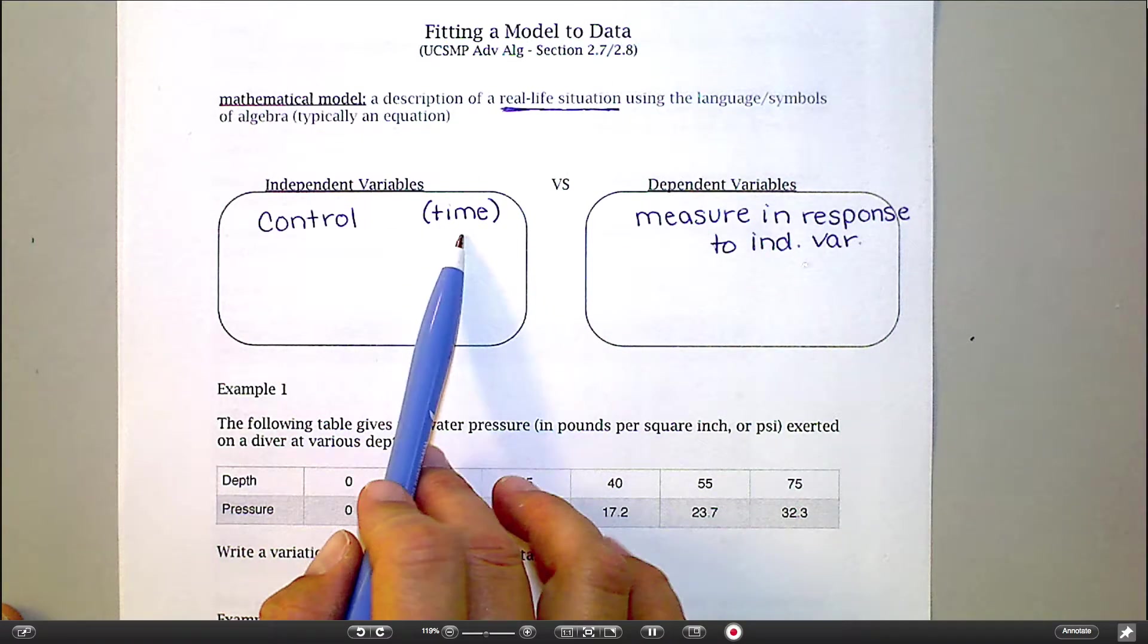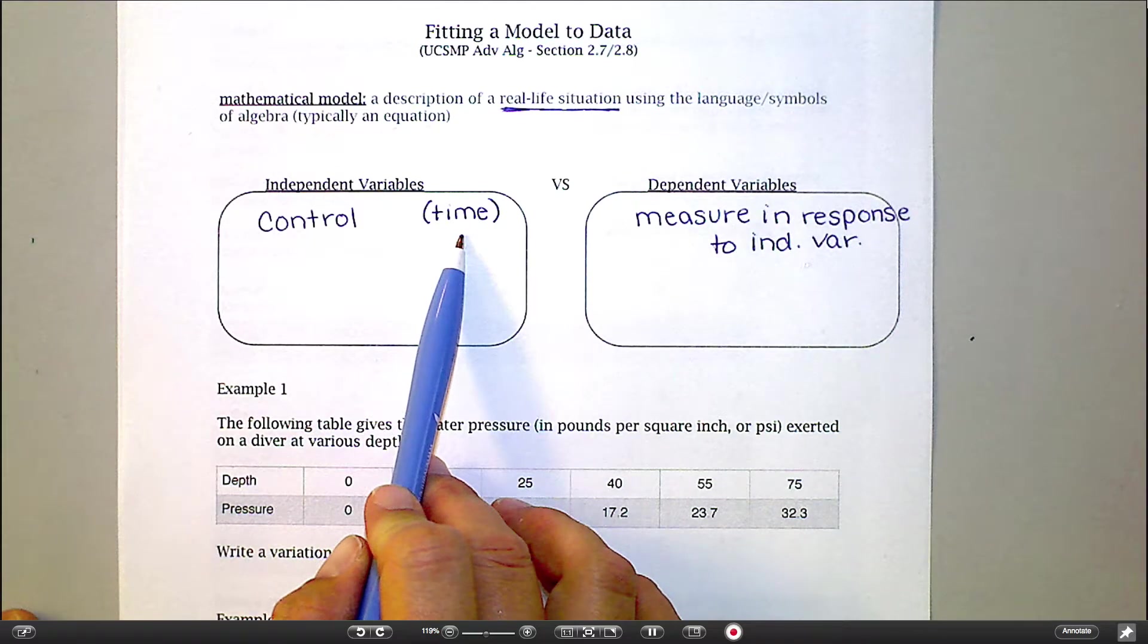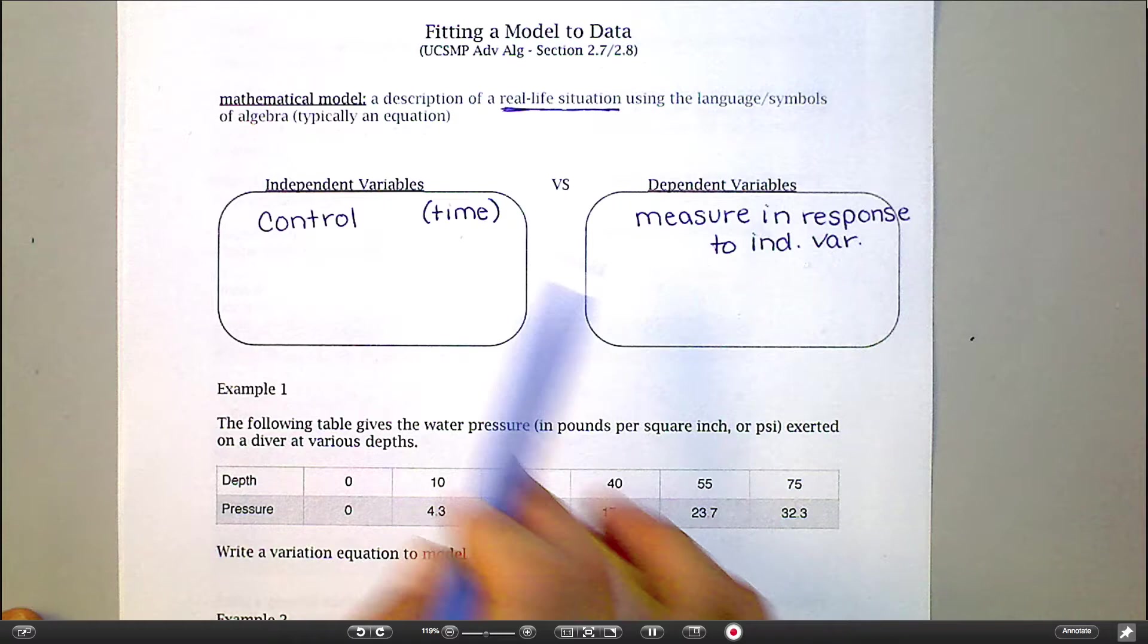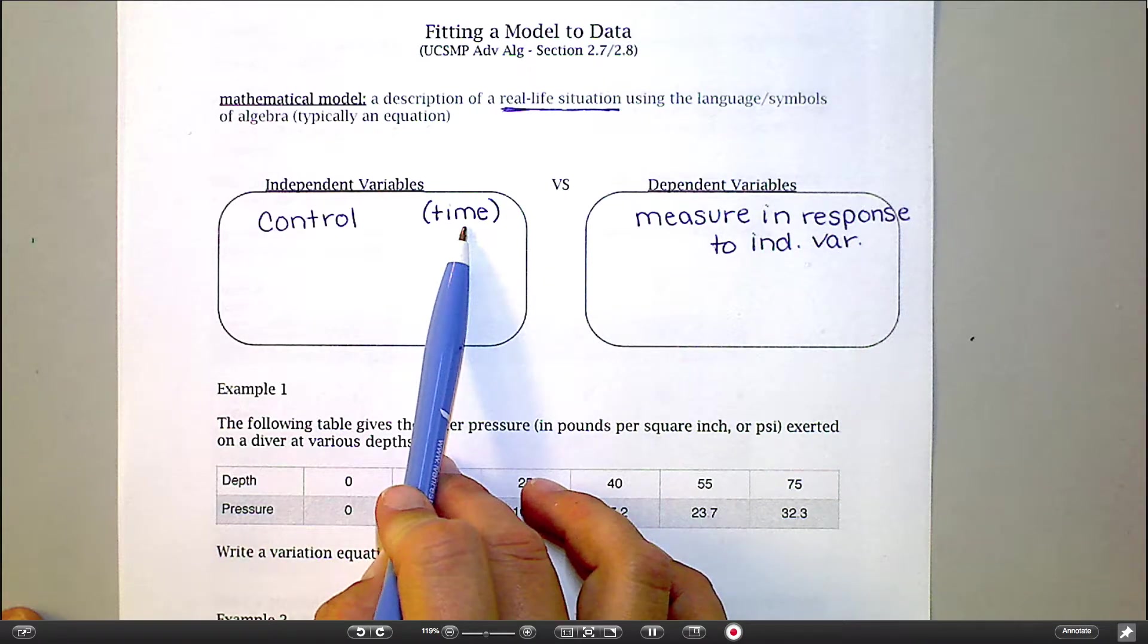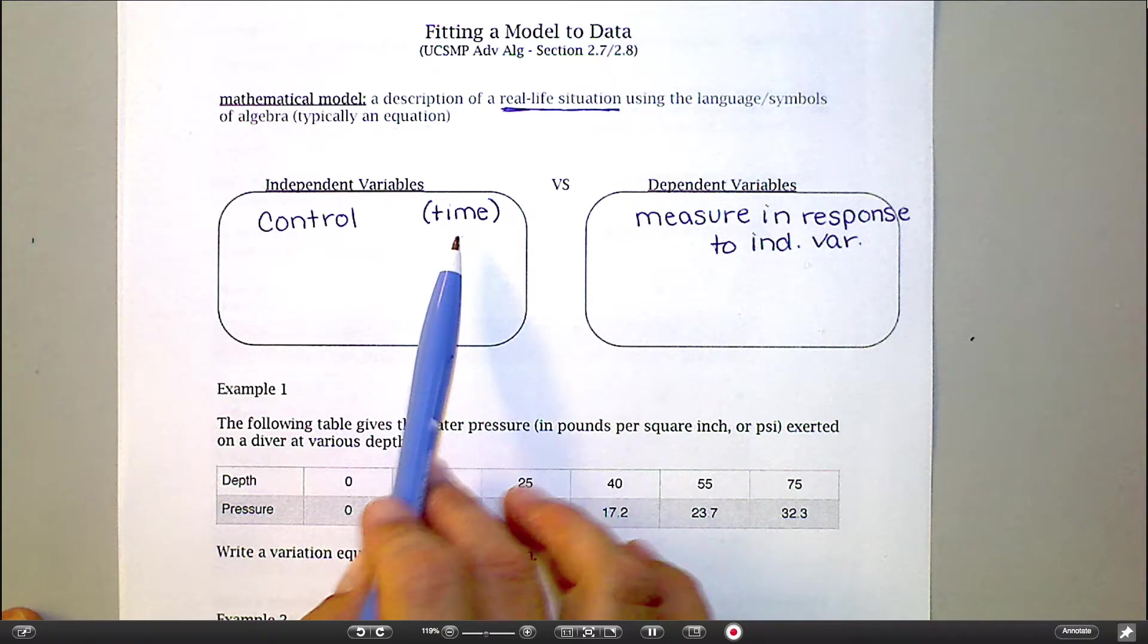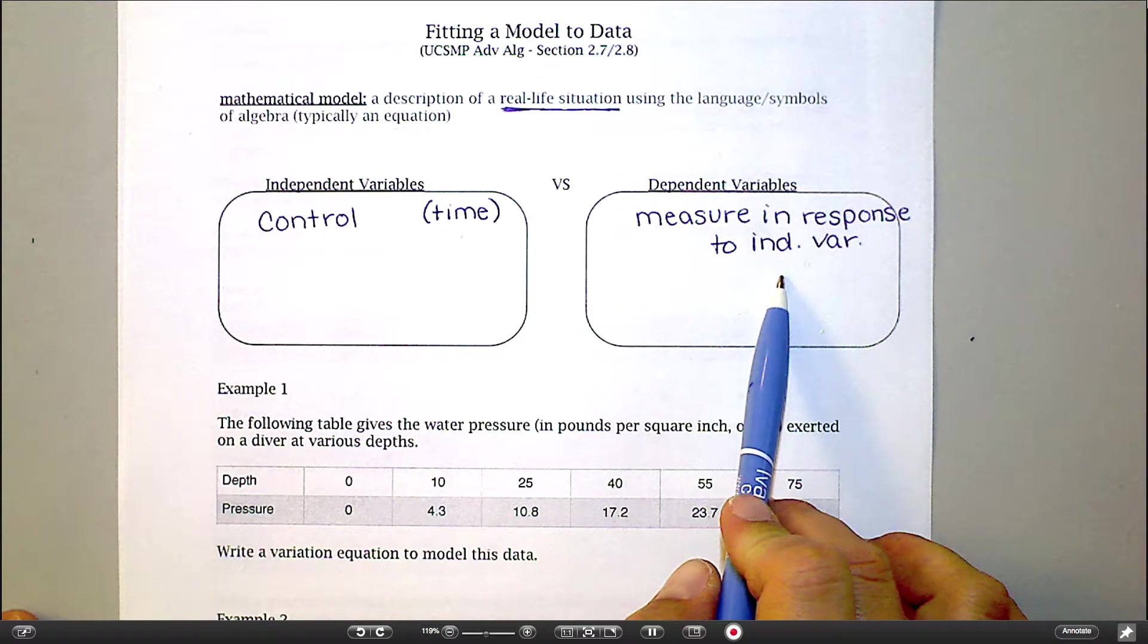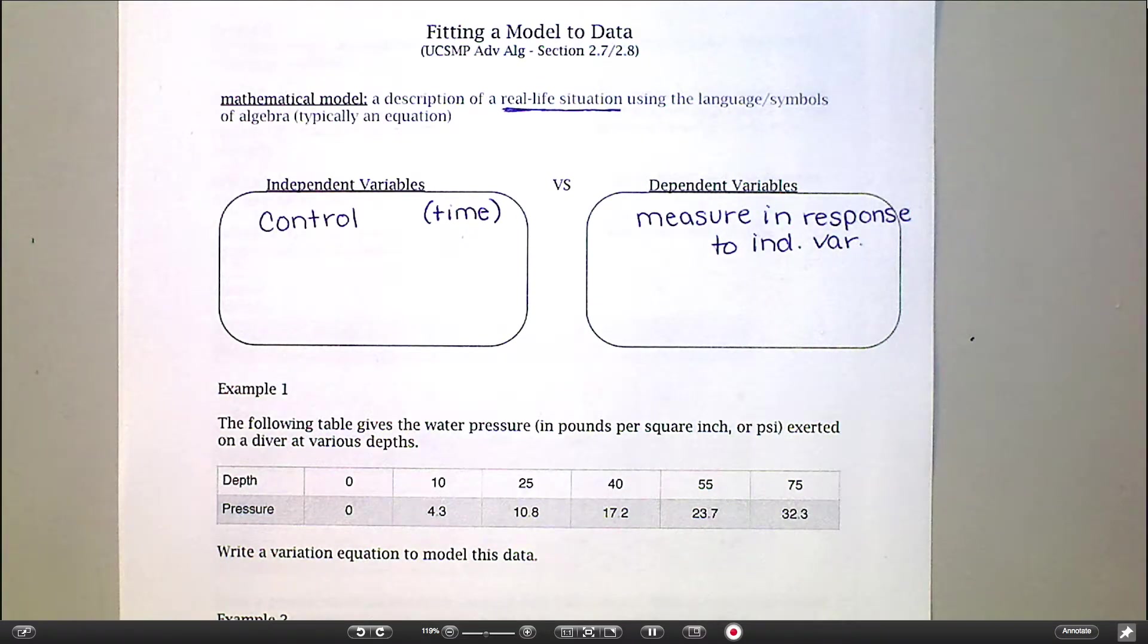For example, a lot of the time, time is considered to be an independent variable. You have no control over time, but time keeps ticking along without you having to manipulate anything, without you having to change anything. So you can measure time in nice equal intervals. And so let's say you wanted to measure the temperature based on the time of day. So the time of day is what you can watch, it's what you can measure in steady intervals. And then the dependent variable, the temperature, is what you're looking at in response to what time of day it is.